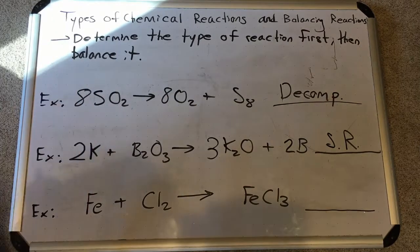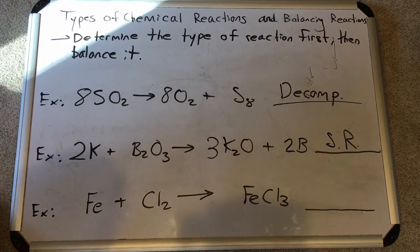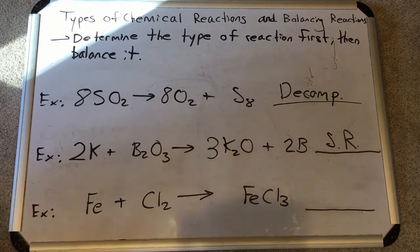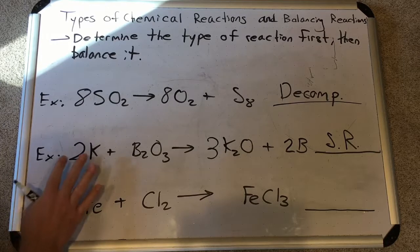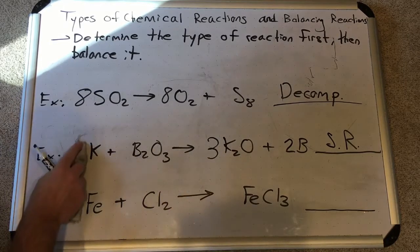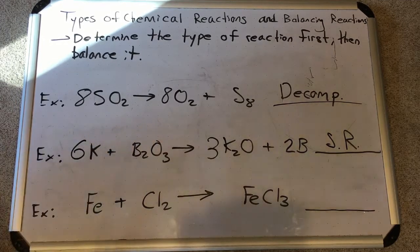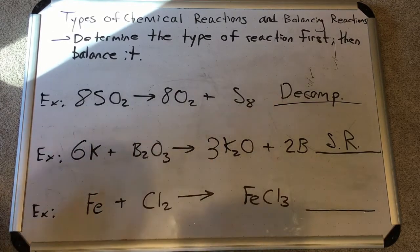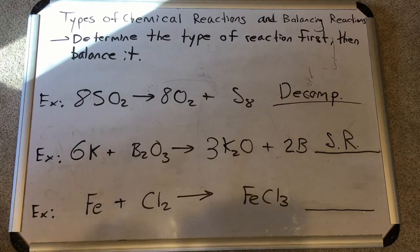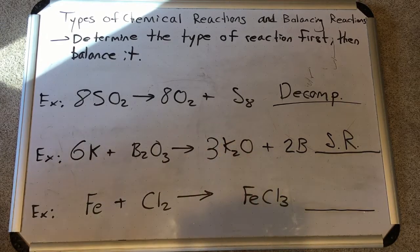We're not done yet — tripling K2O gives 3×2 = 6 potassiums on the product side, so we need to go back and update the reactant K to 6 as well. Now checking: six potassiums on each side, two borons on each side, three oxygens on each side. The coefficient 3 applies to everything in K2O. This one is finished.